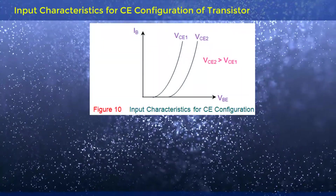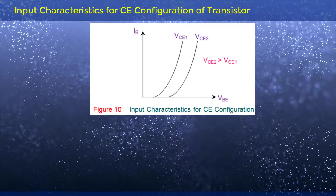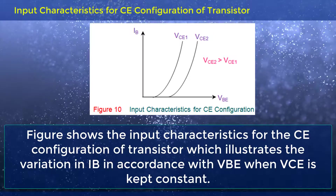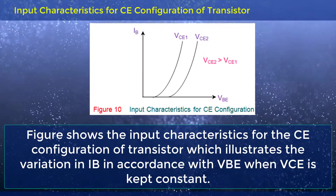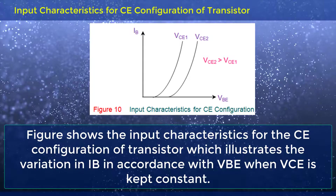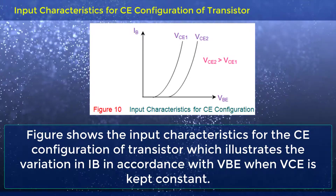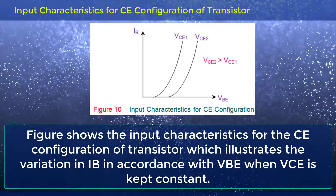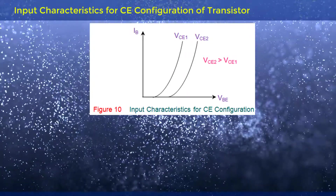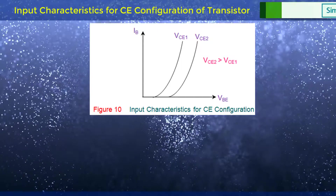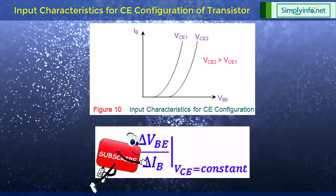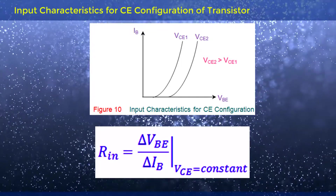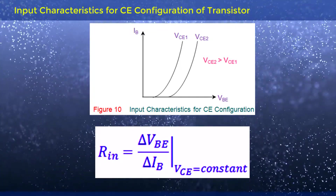The input characteristics of CE configuration of Transistor are shown in the figure, which illustrates the variation in IB in accordance with VBE when VCE is kept constant. From the graph shown, the input resistance of the transistor can be obtained as R_IN equals delta VBE divided by delta IB, where VCE is constant.